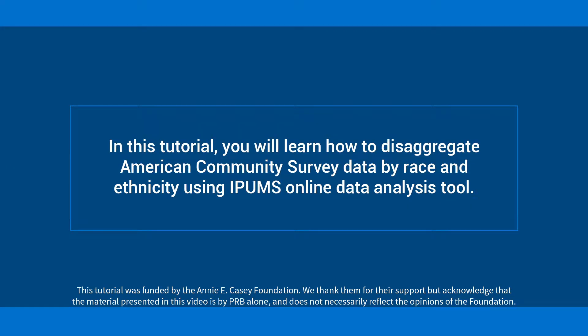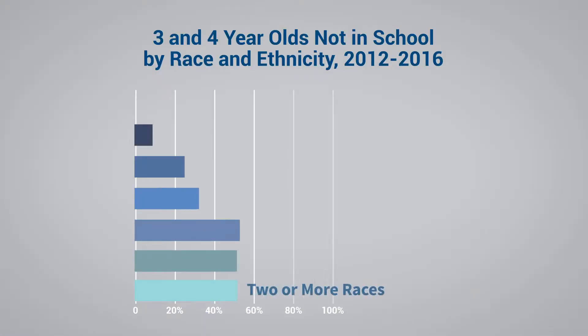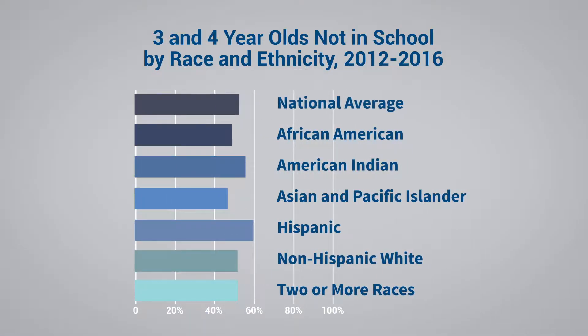In this tutorial, you will learn how to disaggregate American Community Survey data by race and ethnicity using IPAM's online data analysis tool. We will work through an example of how to estimate racial and ethnic differences in the percent of young children in the United States who are not attending preschool, using the same racial and ethnic categories as the published ACS tables.